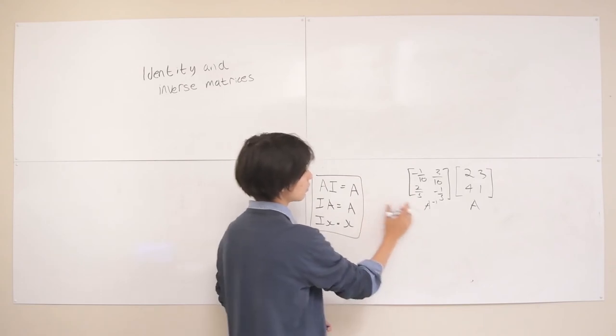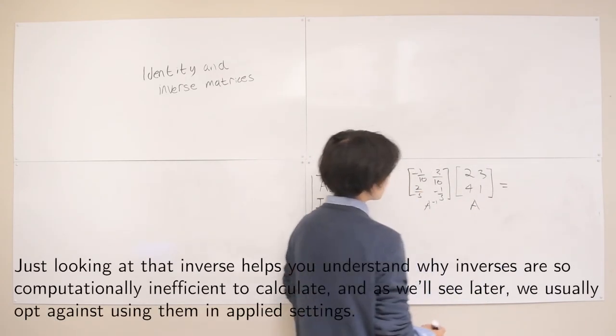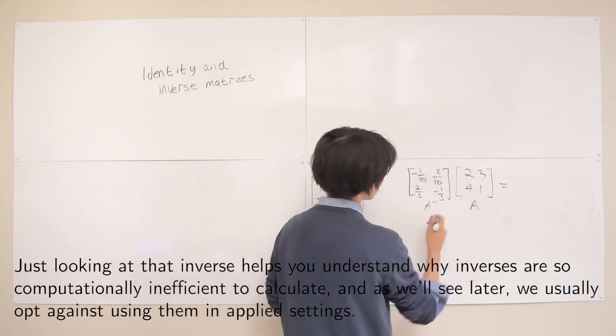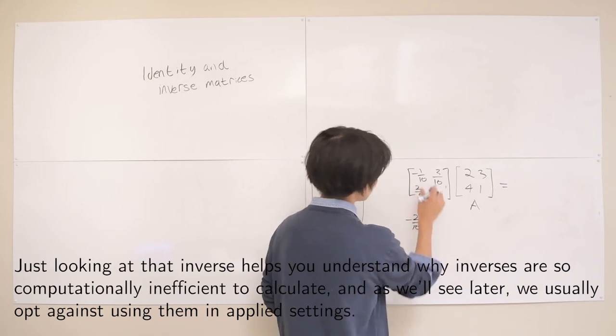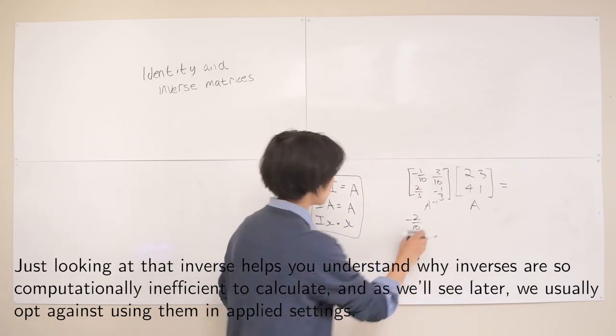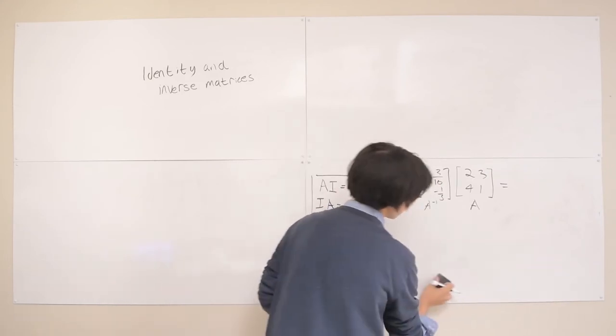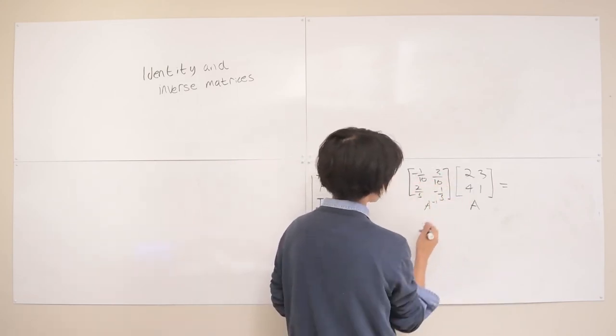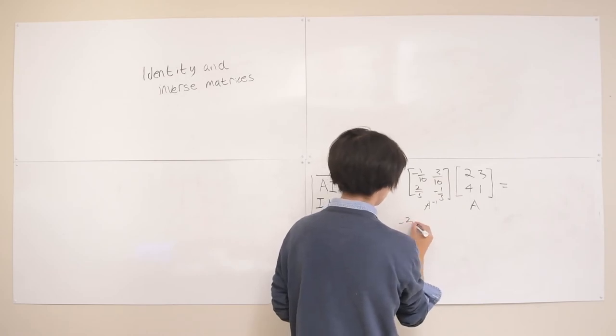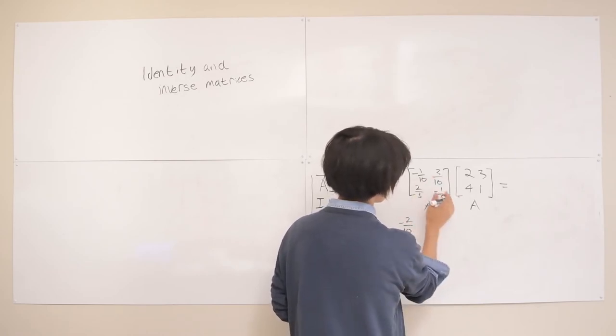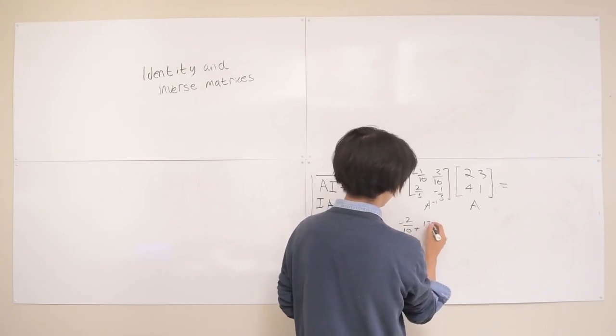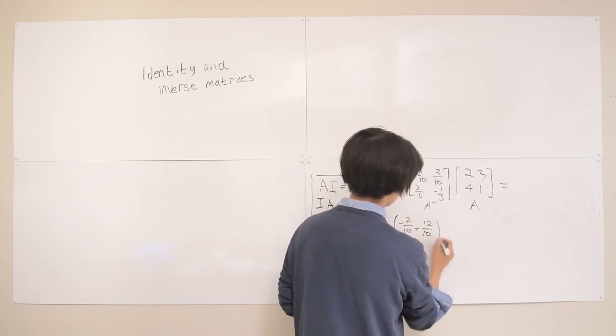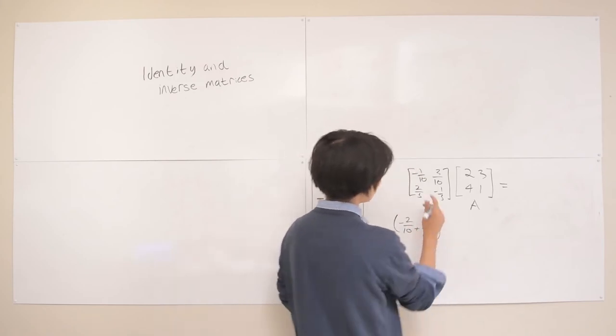So since that's the inverse and this is the true matrix, we should get back the identity. Let's just test that out. So let's do this with that. So that's going to be negative 2 over 10. So it's a little bit more tough because we have some interesting multiplications here. So we do this with this. So we get negative 2 over 10 plus 12 over 10. So that's going to be 10 over 10. So that's going to be equal to, well, let's just do them one at a time.